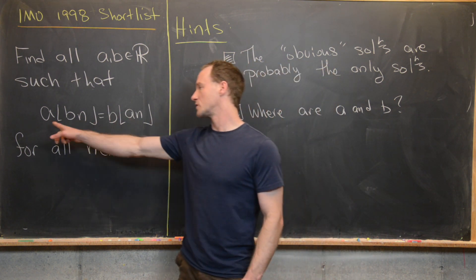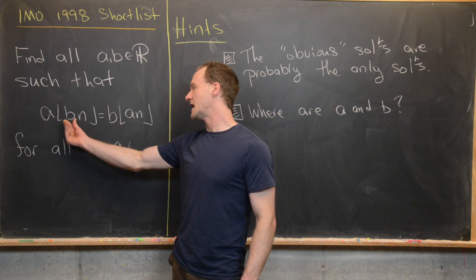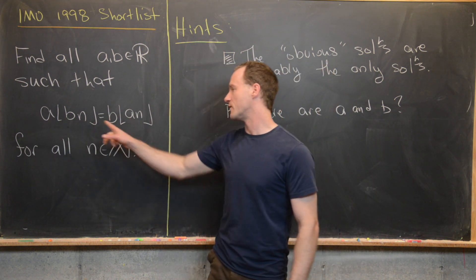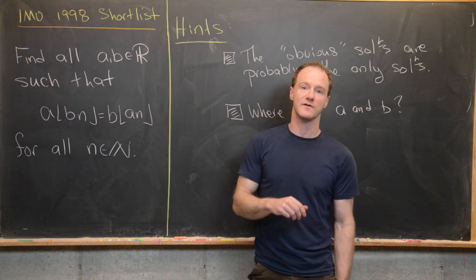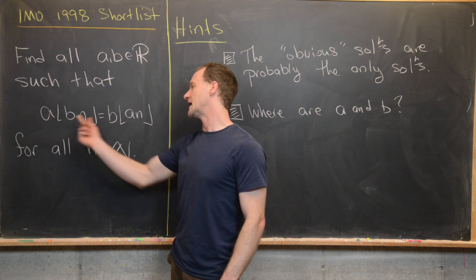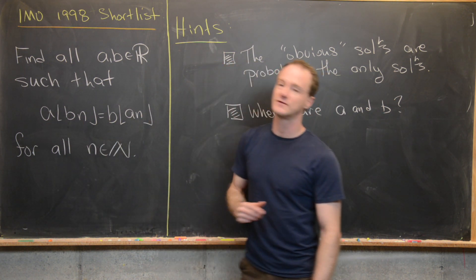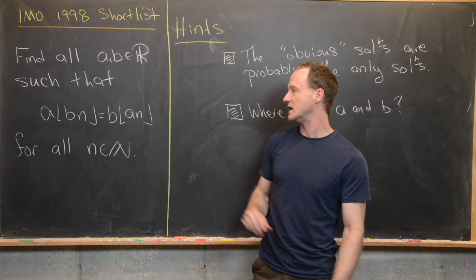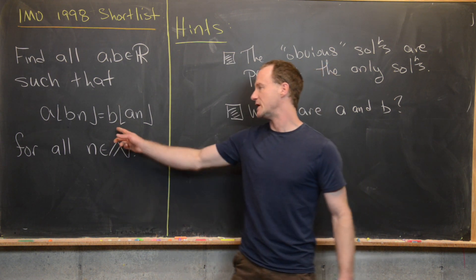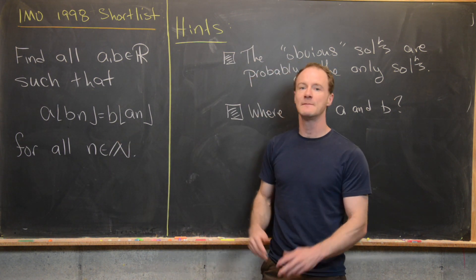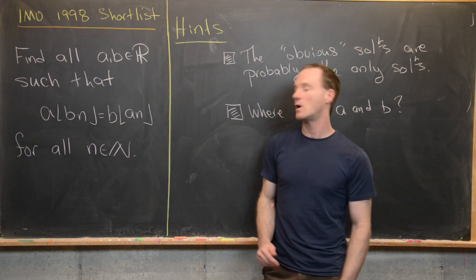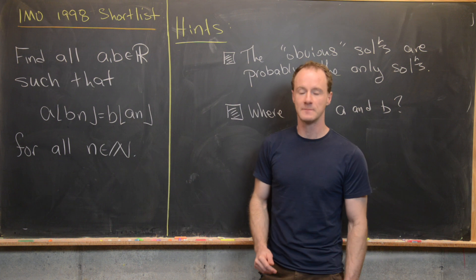In other words, we need A times the floor of B to equal B times the floor of A, and also A times the floor of 2B to equal B times the floor of 2A, and so on and so forth.